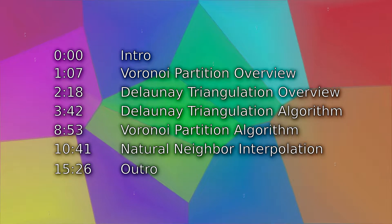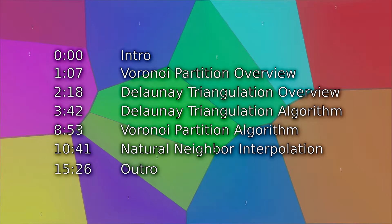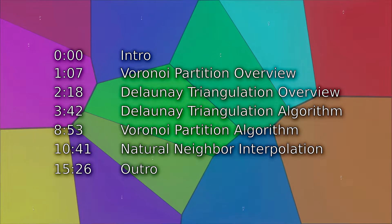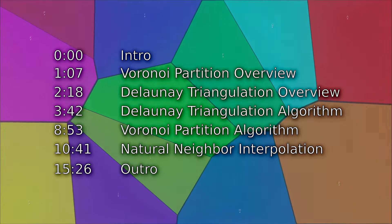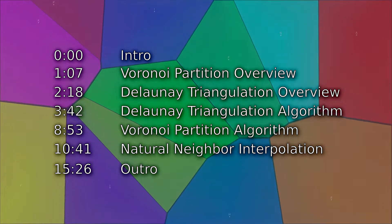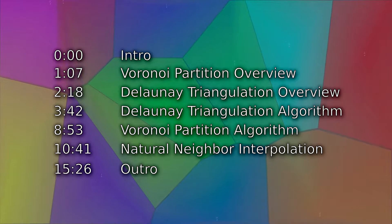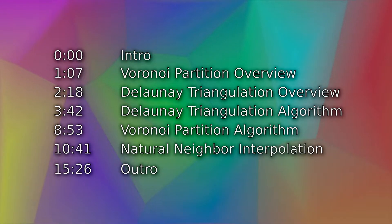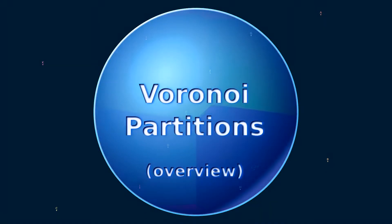Let's use animation to get an intuitive feel for how Voronoi Partitions and Delaunay Triangulations behave. Feel free to use the video timestamps to jump to the sections that interest you, but I do recommend watching everything in order. Both of these algorithms are given a set of xy coordinates as inputs and produce polygons based on those input points as outputs. We'll start with Voronoi Diagrams.